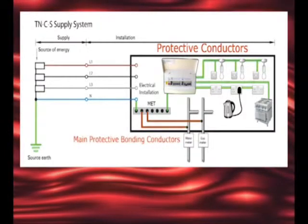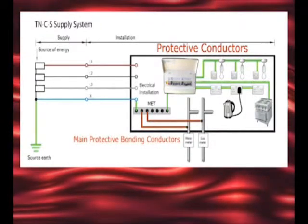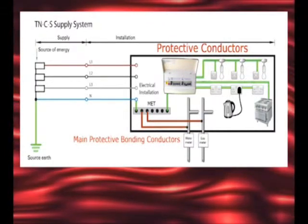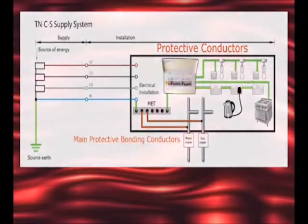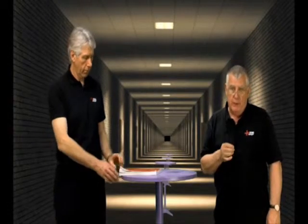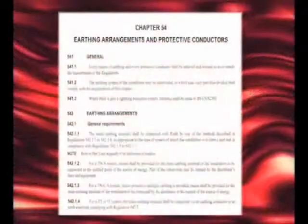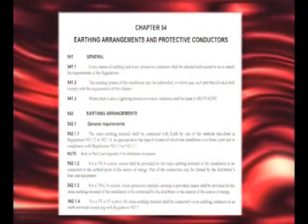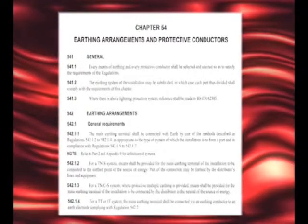Main protective bonding conductors connect extraneous conductive parts such as gas and water pipes to the main earthing terminal. Another protective conductor you might encounter is a supplementary protective bonding conductor — we will examine these later under the topic of additional protection. All protective conductors must be suitably sized in accordance with Chapter 5-4 of the Regs, so they can safely carry the expected level of fault current until the fault is cleared.